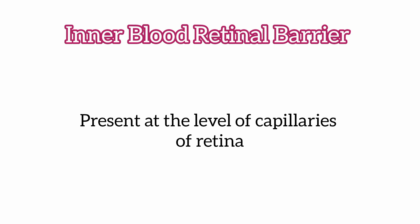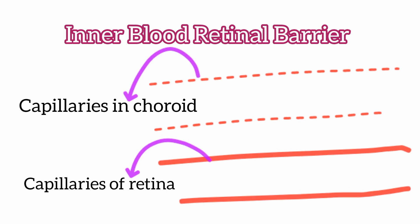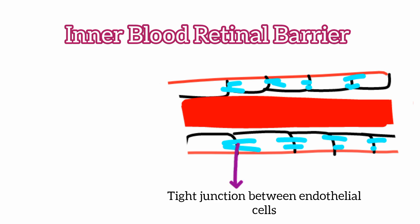Next is the inner blood retinal barrier. This barrier is not present at the level of any retinal layer but at the level of the capillaries of the retina. Unlike the choriocapillaries, the capillaries of the retina do not have any fenestrations or holes. The retinal capillaries will not allow blood to move out freely — there are very tight, strong junctions between the cells in the retinal capillaries that prevent leakage of blood.